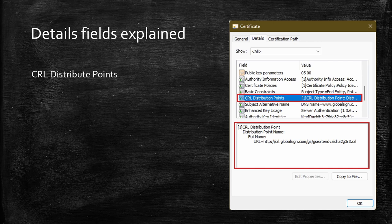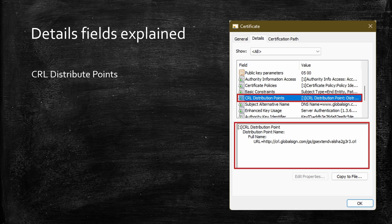A CRL distribution point or CDP is the path from where a remote client can download a CRL. There's usually a URL mentioned in CDP which points directly to a CRL file. This CRL file can be used by the client to check the status of a certificate. You can clearly see in the screenshot there's a URL that says http://crl.globalsign.com/gs followed by the CRL file. So this CRL can be used to check the status of a certificate.